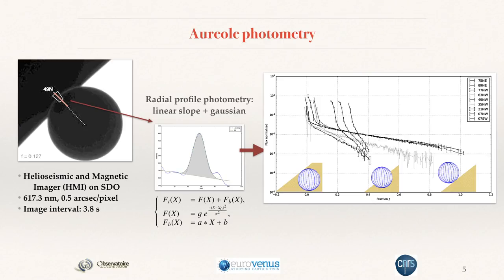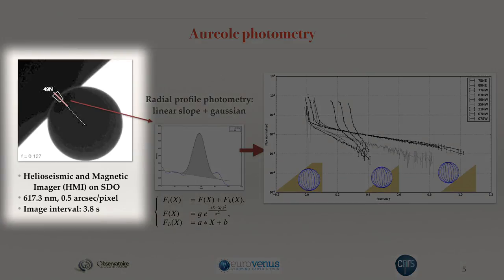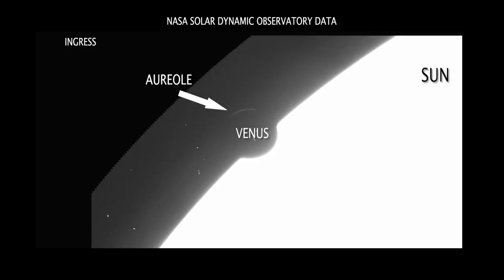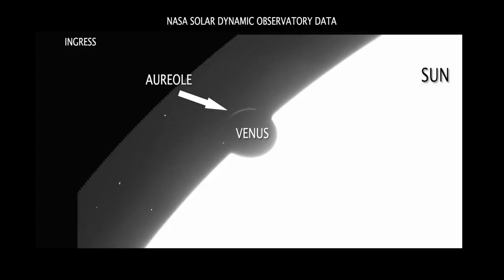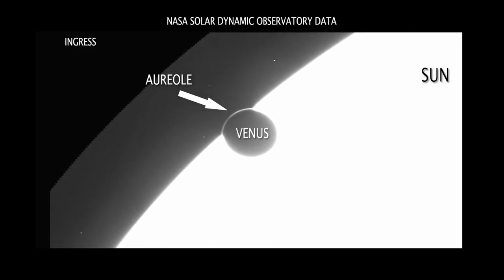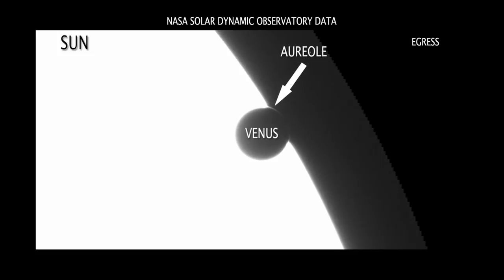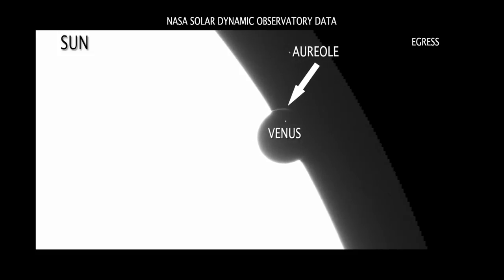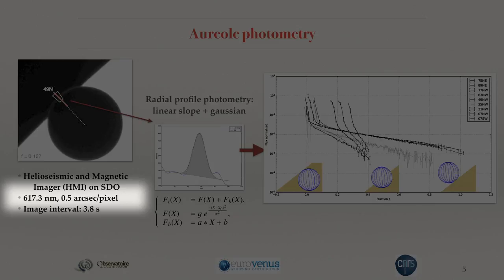For that, we used a very rich dataset obtained by the Solar Dynamic Observatory, from which the previous animation was derived. It consists of hundreds of images covering the ingress and hundreds covering the egress, so a very good time resolution with the spatial resolution indicated there — just a little bit less than four seconds between two images, so a very good resolution in time.